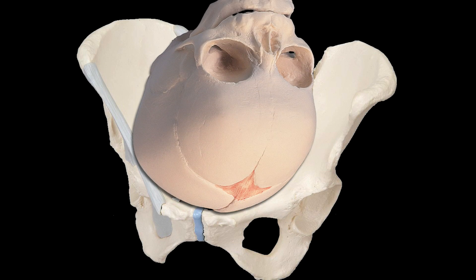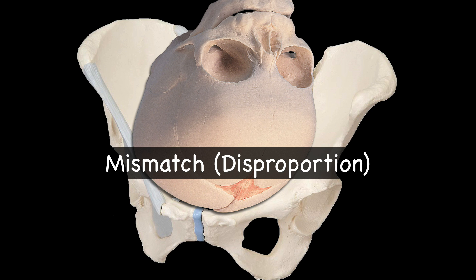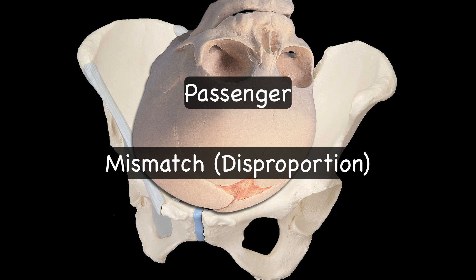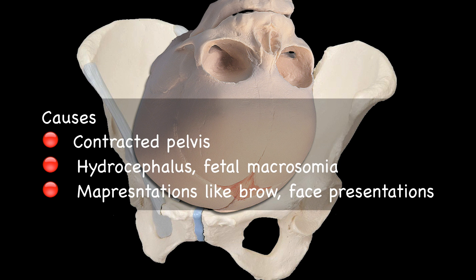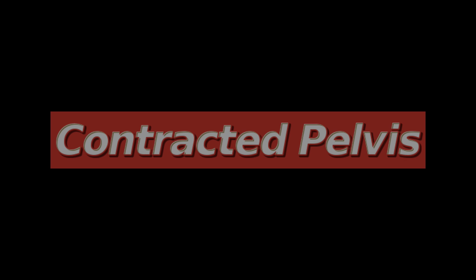Cephalopelvic disproportion is defined as a mismatch, i.e. disproportion between the fetal head which is the passenger and maternal pelvis which is the passage. However, the better term should be fetopelvic disproportion as the presentation is not always cephalic — it may be a breech presentation. The most important absolute cause of fetopelvic disproportion is a contracted pelvis. However, it can also occur due to other causes such as hydrocephalus, fetal macrosomia, and malpresentations like brow and face presentations. In this lecture, I will only discuss contracted pelvis.